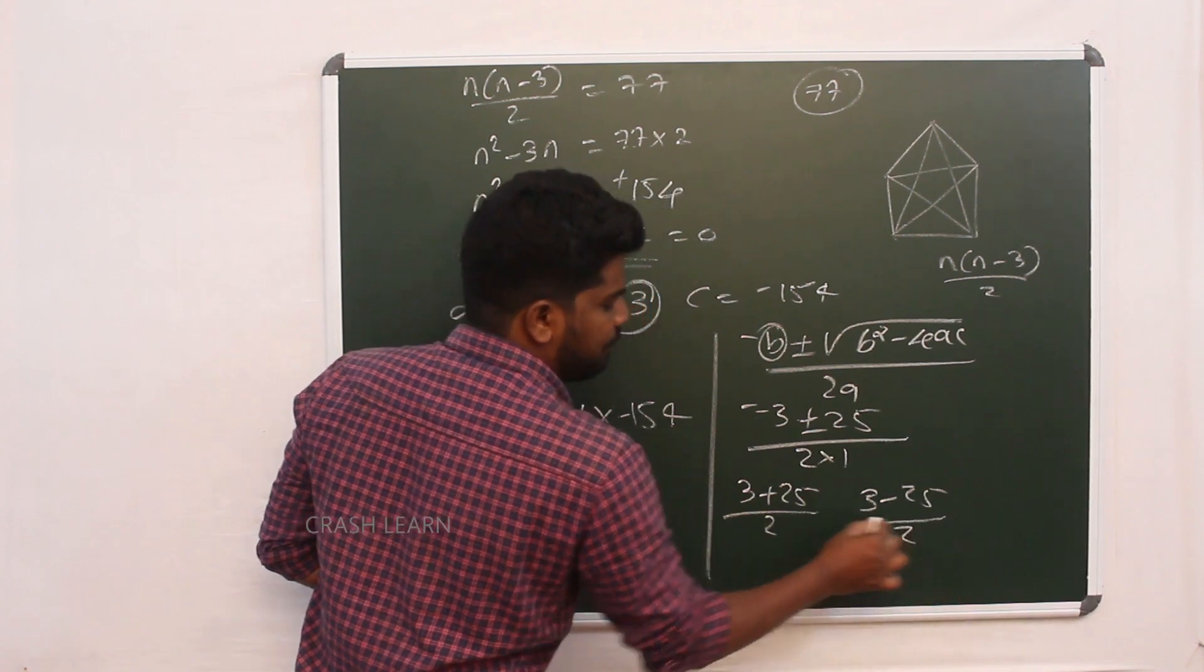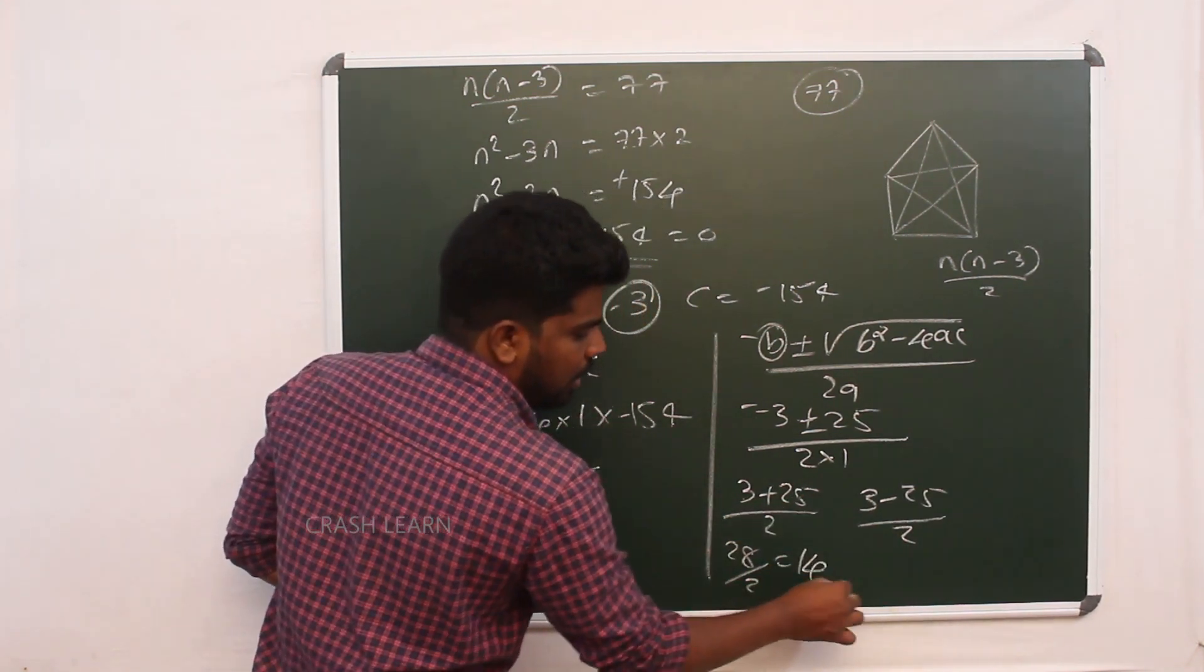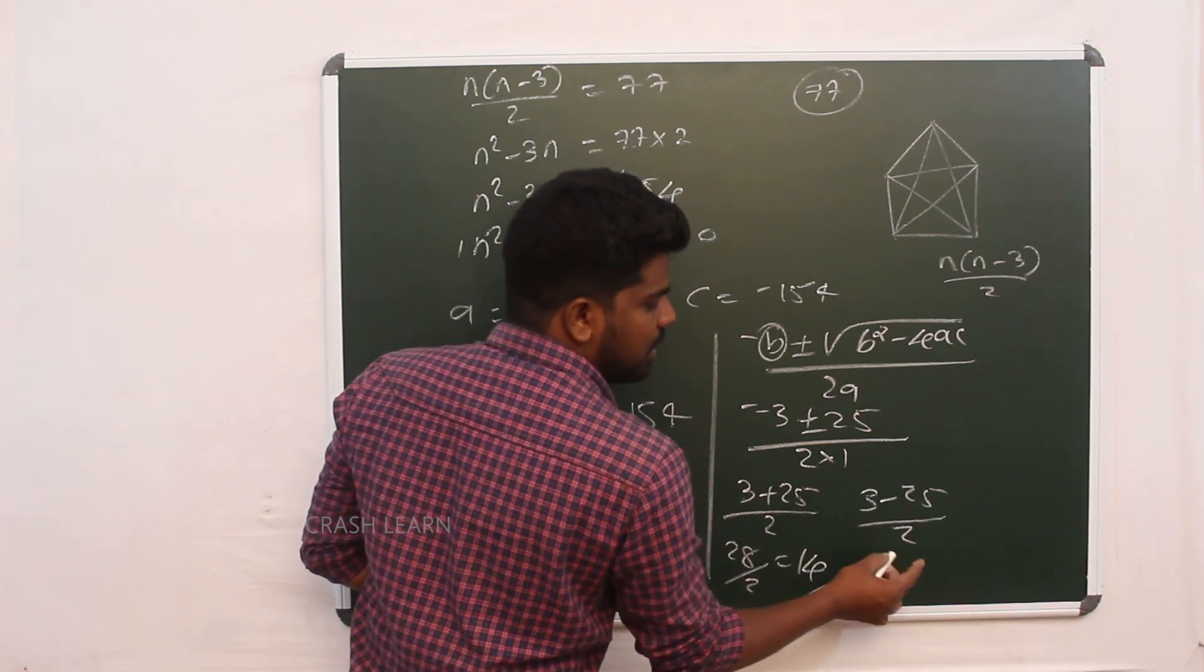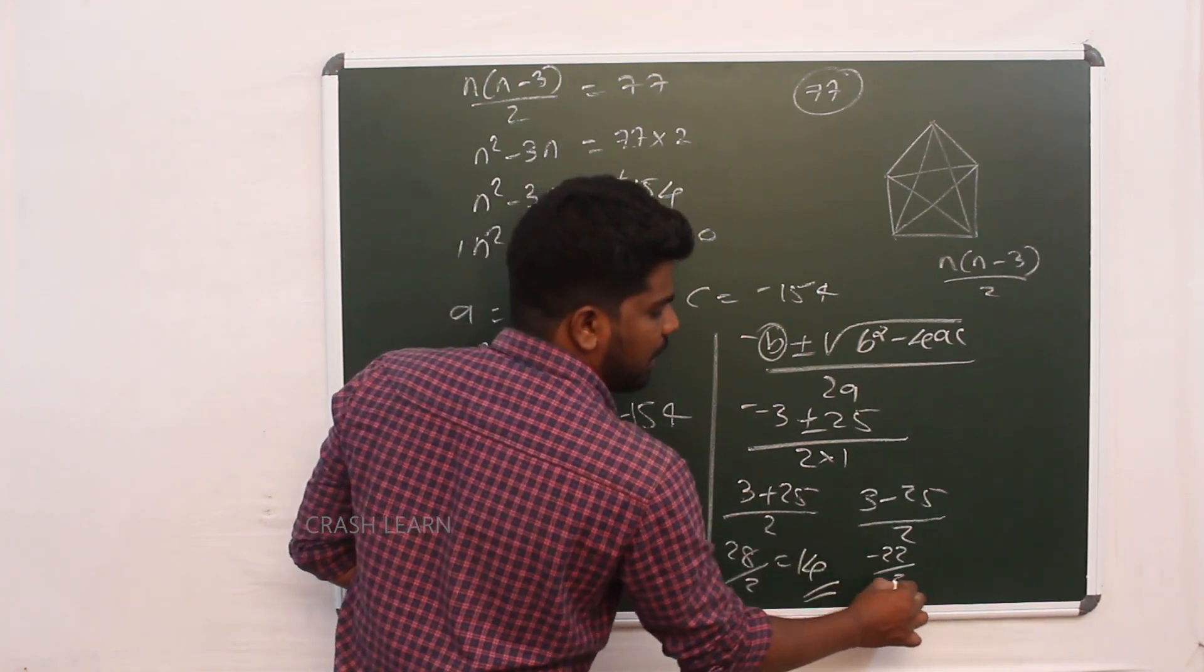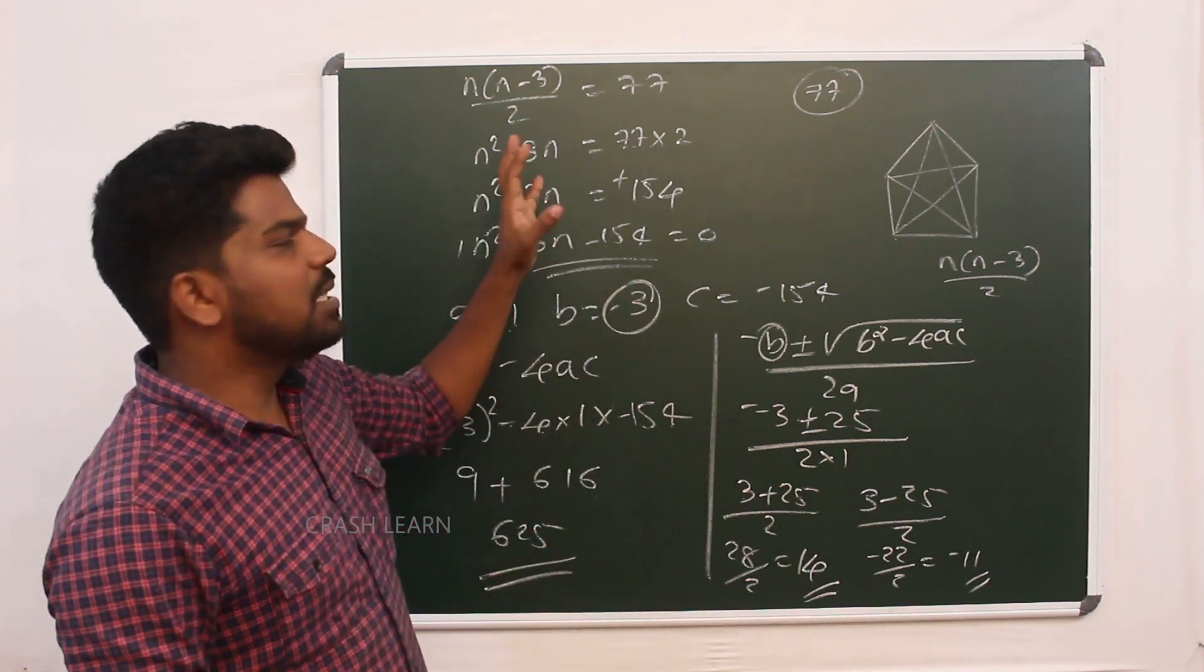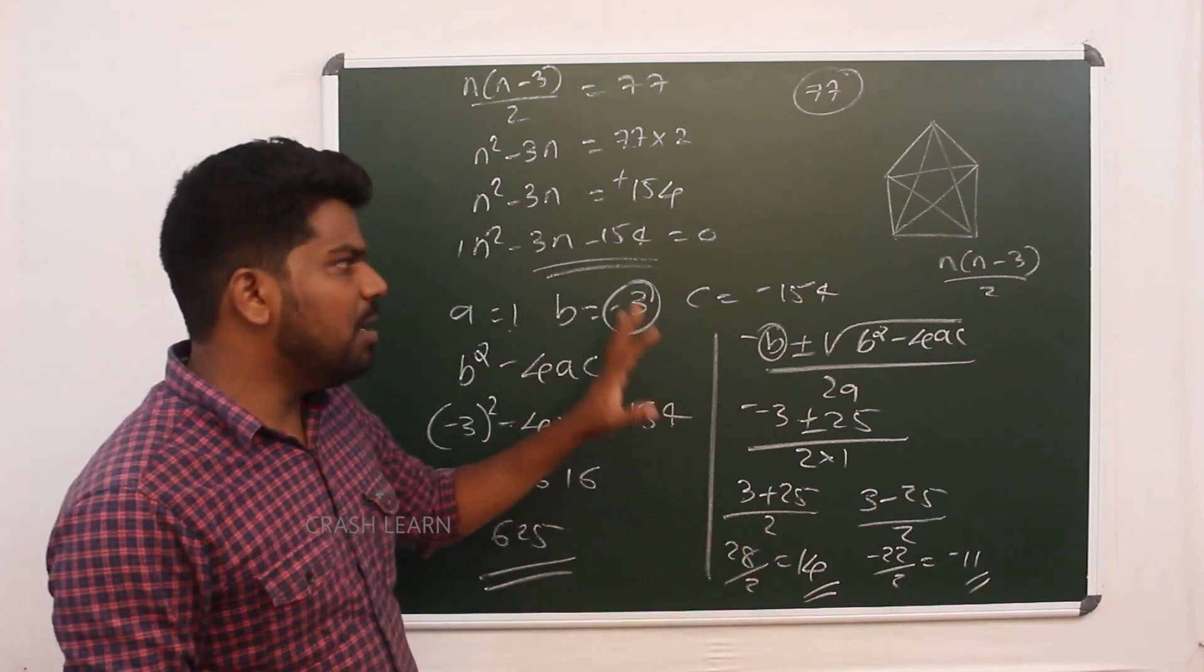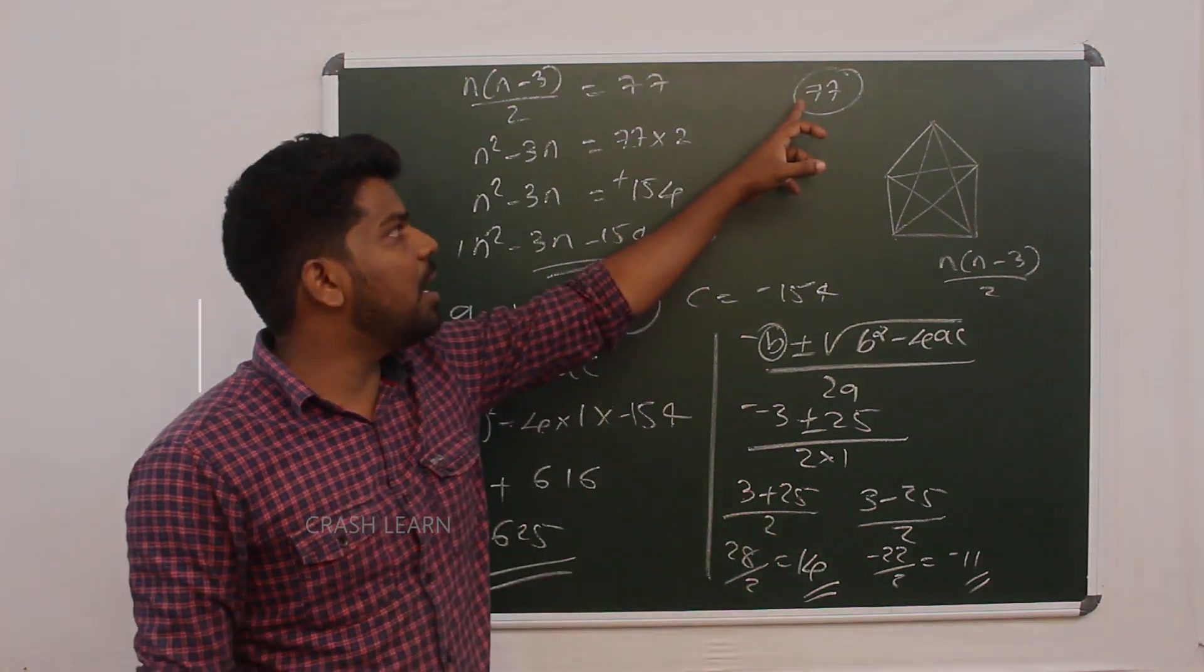3 minus 20 by 2, 3 plus 28 by 2, that is minus 14. If I see 3 plus 9 minus 28 by 2 minus 18. We will take the equation. That is positive. That is my equation 14.